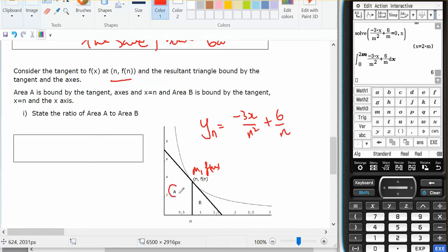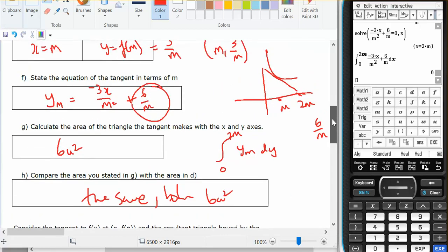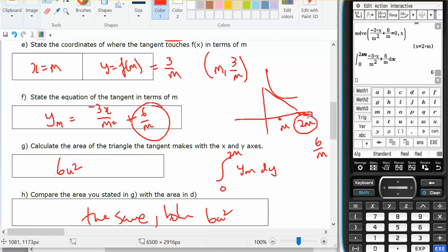And find the ratio of area A to area B. But that's n, then this is going to be 2n, just like when I had it at m, the x intercept was 2m.